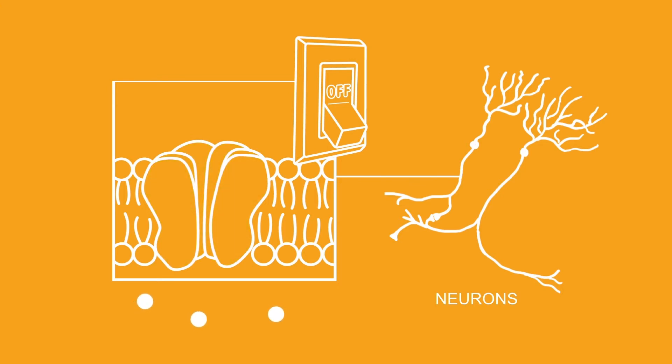With these tools, we can turn neurons off with the flip of a switch. As a result, we can map neural circuitry with unprecedented precision.